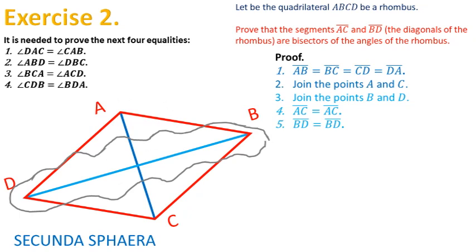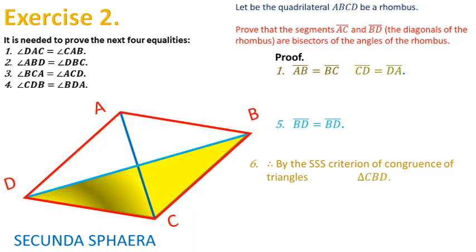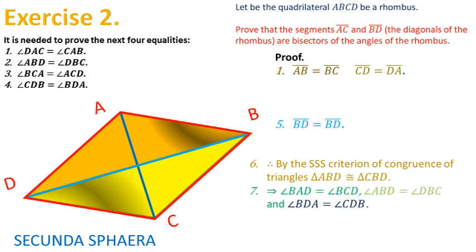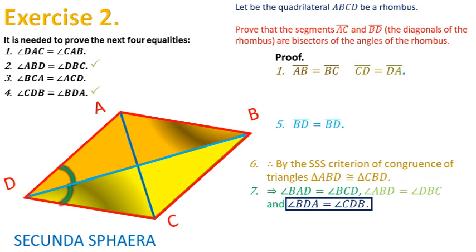Now there is enough information for two pairs of congruent triangles. By the SSS criterion of congruence of triangles, the triangle ABD and the triangle BDC are congruent. Then their corresponding angles will be equal: the angles BAD and BCD are equal, the angles ABD and DBC are equal, giving one of the equalities required. Also, the angles BDA and CDB are equal, giving another equality required.